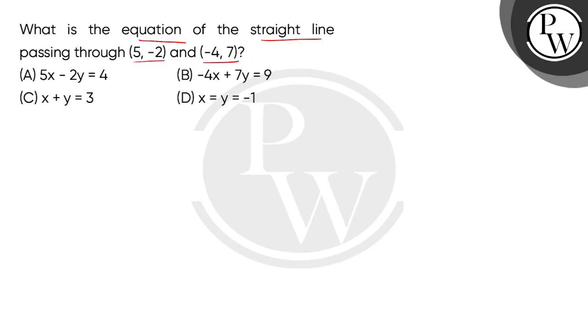Given here are two points: 5, minus 2 (x, y ordered pair) and the second coordinate given is minus 4, 7. We have to find the straight line passing through these two points.